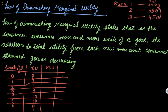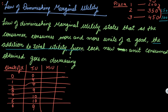From one unit to two units of pizza, the additional utility you are getting is 150. And here, from two to three, you are getting 100 utils as the additional utility. Your additional utility is decreasing. This means the addition to the total utility from each new unit consumed goes on decreasing.